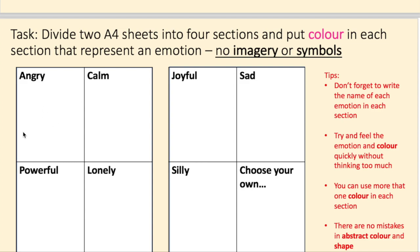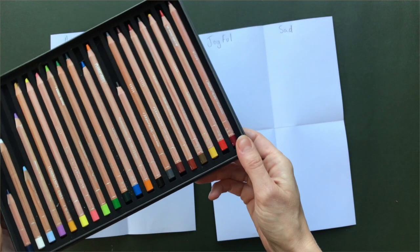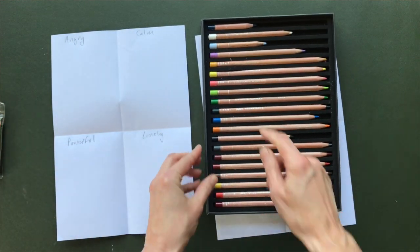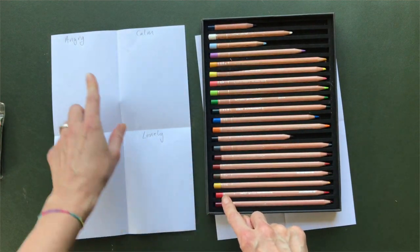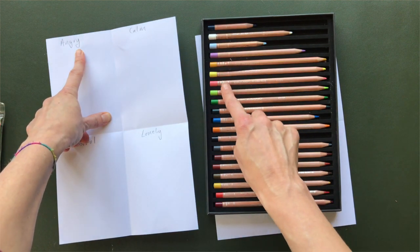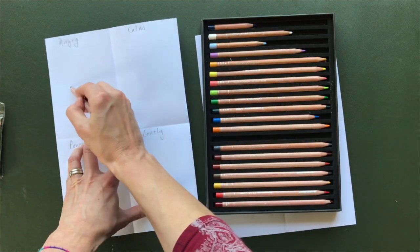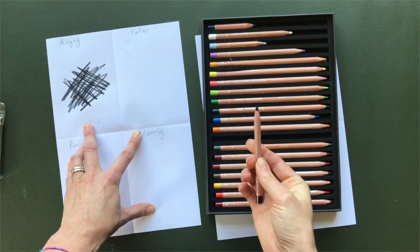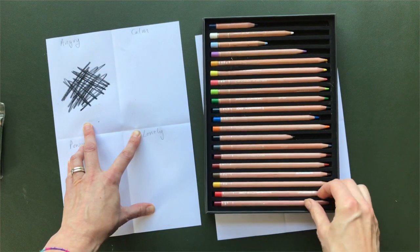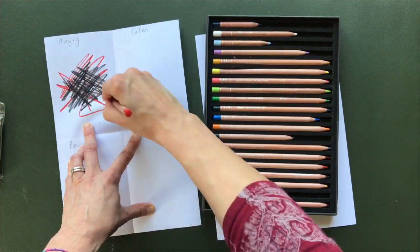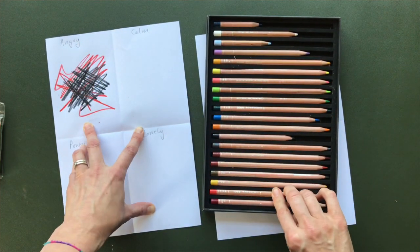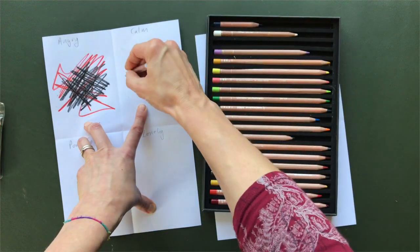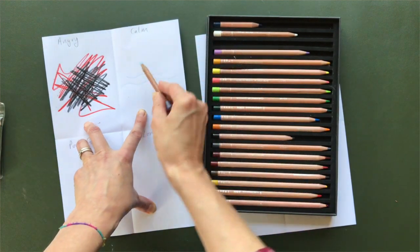You can use shapes and you can use line as well, but just try and put certain colors. You could have one color, maybe there's two colors that represent, maybe three. What colors and shapes could you put in these squares that would represent these emotions? Again, don't forget to write the name of each emotion in each section. And try and feel the emotion and color without thinking too much about it. So try and do it as a feeling more than thinking.